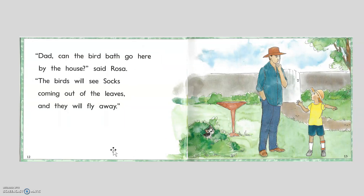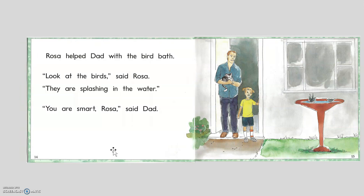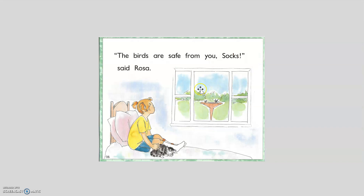So Rosa came up with an idea. She said, 'Dad, let's move that birdbath closer to the house. That way the birds will see Socks.' So they did that. And what happened? The birds were happy and safe, and they were splashing around in the birdbath. Socks was not bothering those birds anymore. Dad said, 'You were so smart to do that. Now the birds are safe. Socks is quiet and happy and home.'